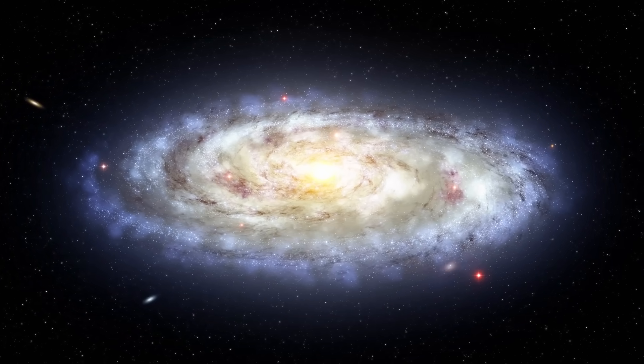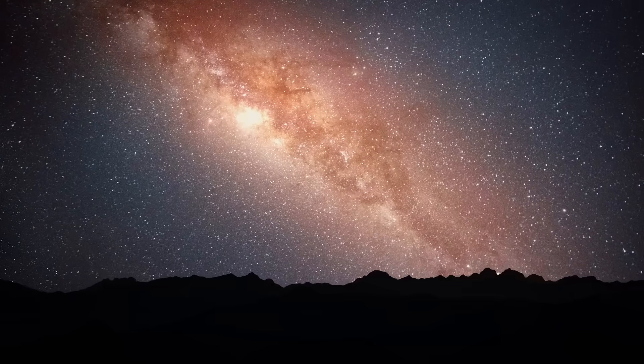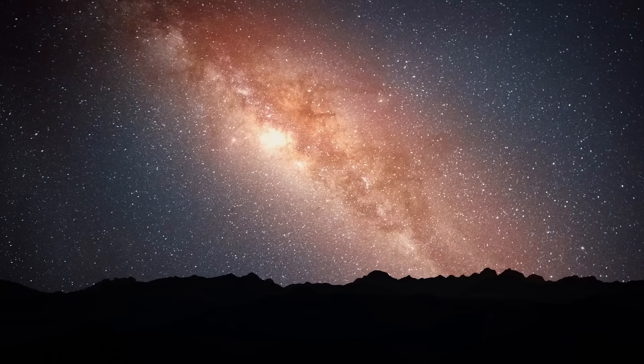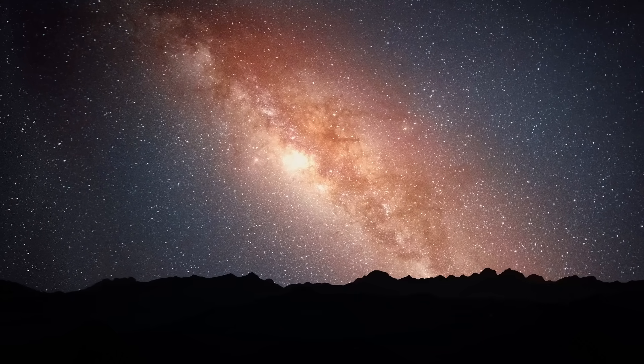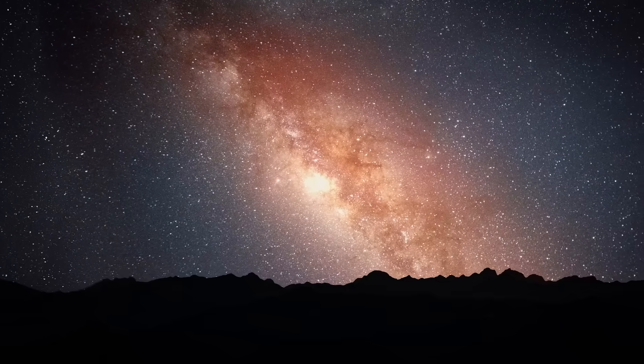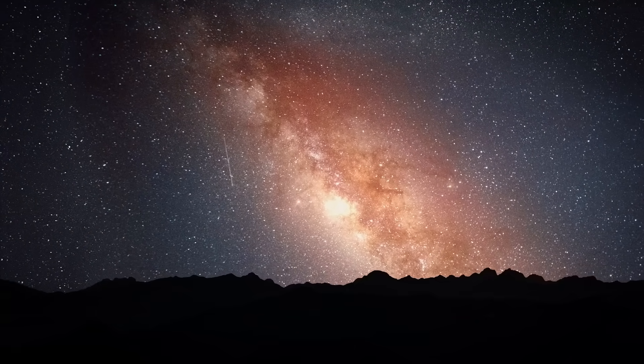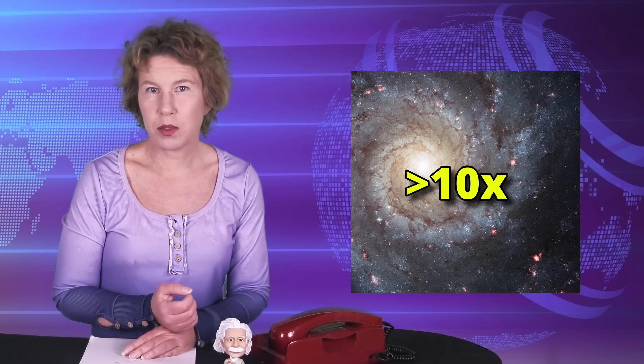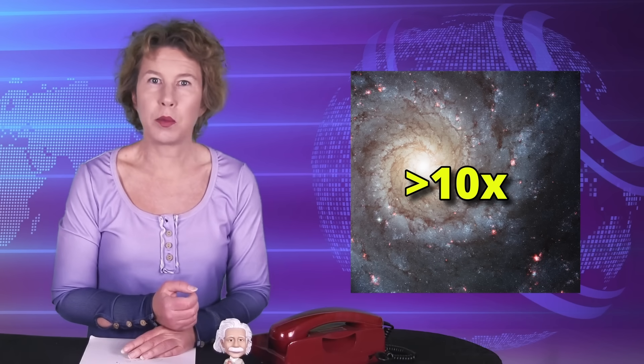Dark matter, astrophysicists believe, makes gravitational lenses stronger, makes structures in the universe form faster, and it also makes galaxies rotate faster. That includes our own galaxy. Estimates say that the Milky Way contains more than 10 times as much dark matter as normal matter.